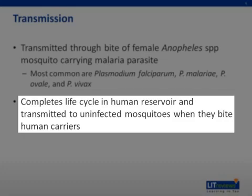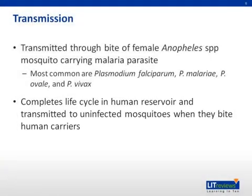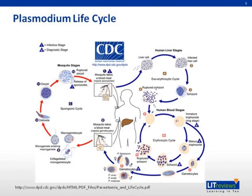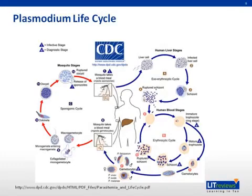This slide shows the complicated life cycle of the Plasmodium parasite. The take-home points are: number one, humans act as the reservoir that allow the spread of the Plasmodium parasite from infected to uninfected mosquitoes; and number two, humans become symptomatic about 12 to 35 days after they are bitten, when schizonts are released and the parasite enters the bloodstream to begin the erythrocytic cycle, which is labeled as B on the slide.